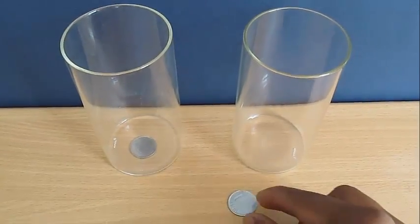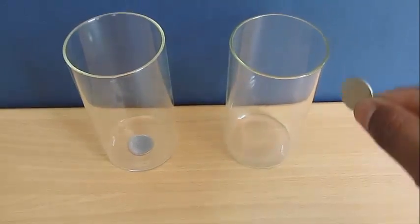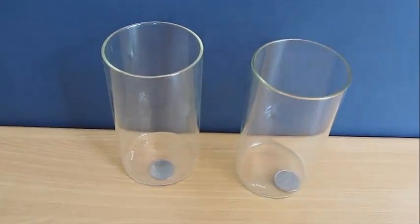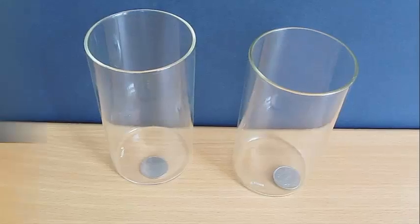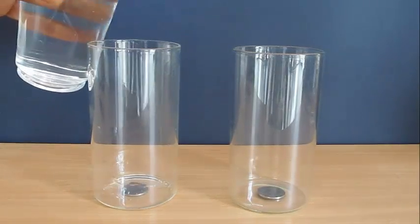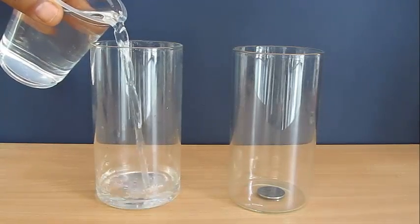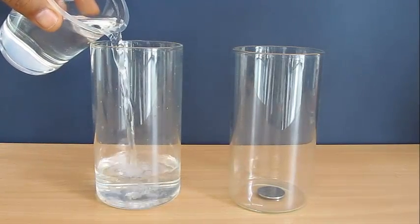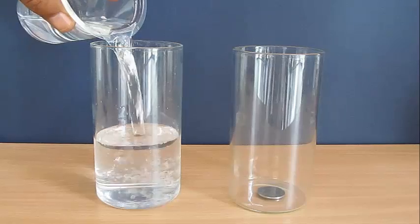First take these two coins and put one coin underneath the glass and one coin inside the glass. Now start pouring water in the glass and you will see the coin actually disappears. You have performed the trick.